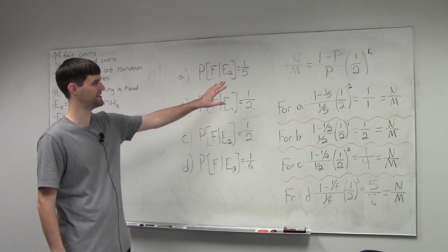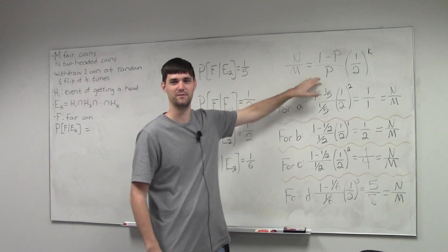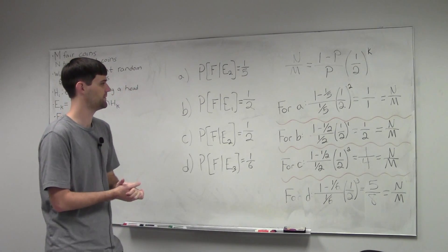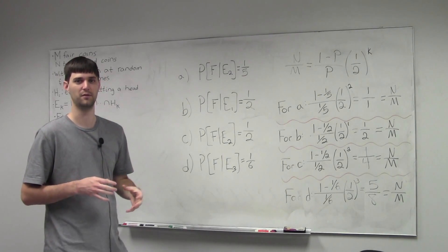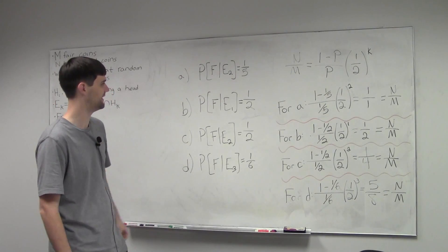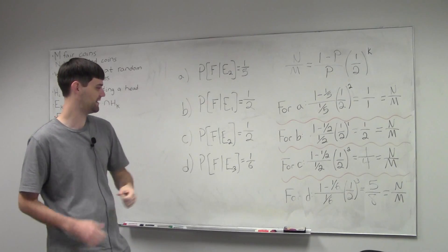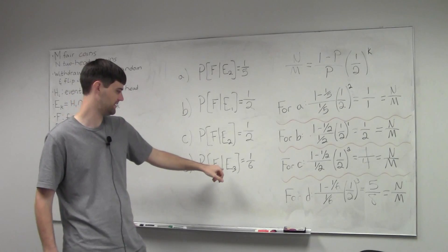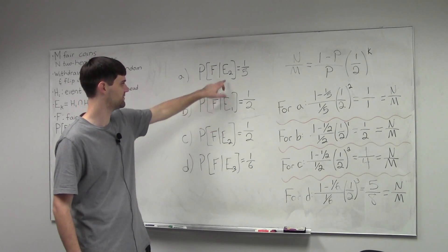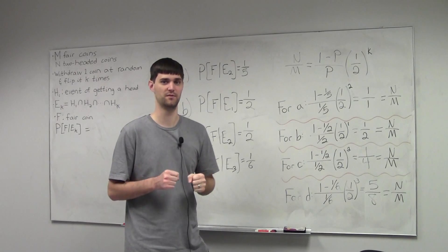We just derived an expression for the ratio of unfair coins to fair coins in terms of the probability that we have a fair coin given we see a certain number of heads in a row — where k is that number of heads. We have four examples, and what we want to do is find the smallest number of fair and unfair coins that will give us these probabilities. Our cases are: P(fair | two heads) = 1/5; P(fair | one head) = 1/2; P(fair | two heads) = 1/2; and P(fair | three heads) = 1/6. It's straightforward algebra to plug into the expression — we have our probabilities and number of flips as our two variables, and we want the minimal number of coins, meaning the irreducible fraction.